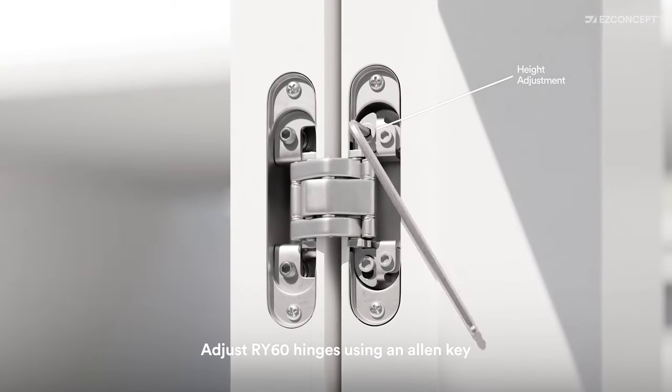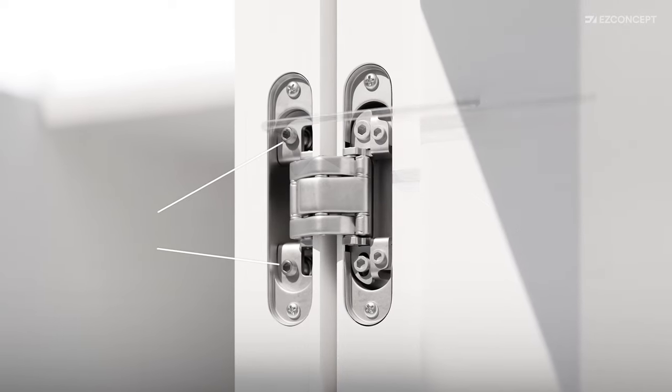Hang the door on the jamb by screwing into each hinge bracket. Where required, use an allen key to adjust the height of the door, the width of the clearance between the door and jamb, as well as the depth of the door position.